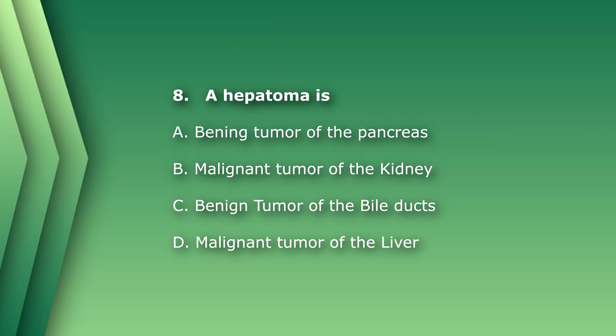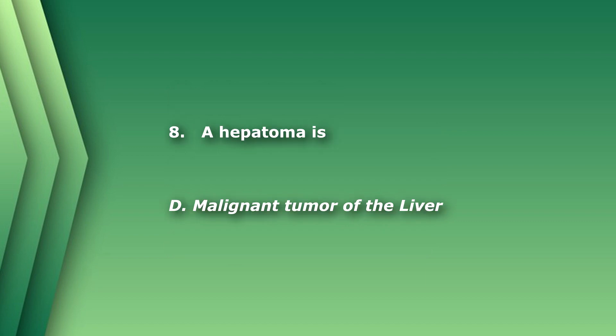Question 8: A hepatoma is: A) a benign tumor of the pancreas, B) malignant tumor of the kidney, C) benign tumor of the bile ducts, or D) malignant tumor of the liver. The word 'hepa' means liver, and the only answer involving the liver is D. A hepatoma is a malignant tumor of the liver, also known as hepatocellular carcinoma.